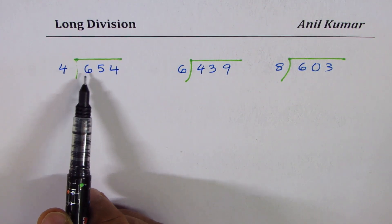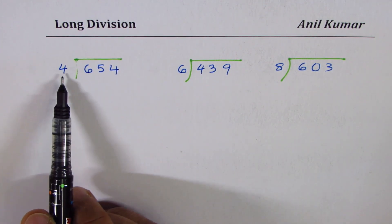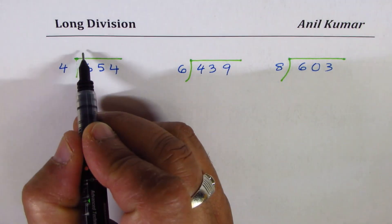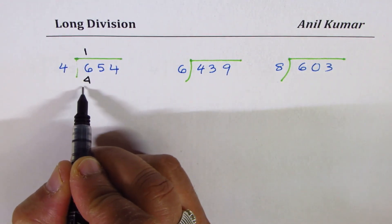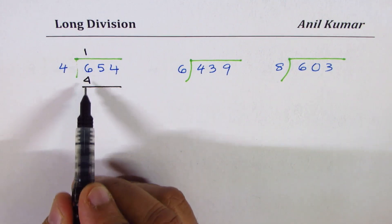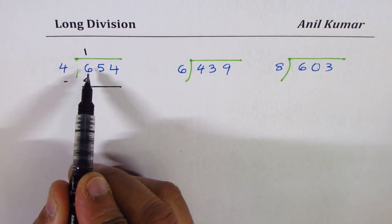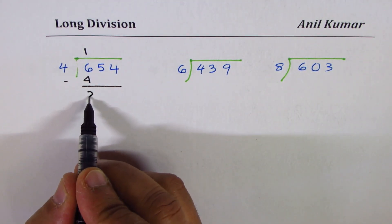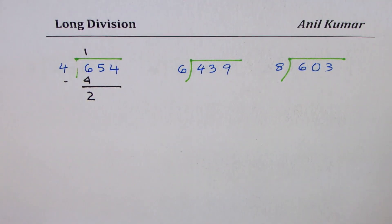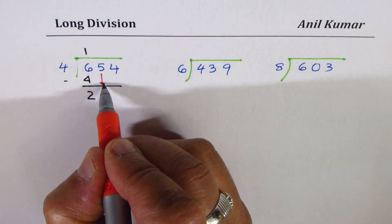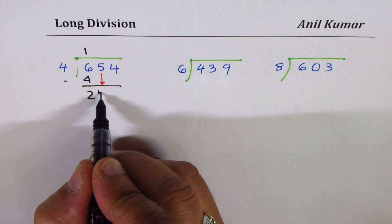Now, 6 is greater than 4, so 6 can be divided by 4. It goes one time. One time 4 is 4. The second step is we have to take away. So you take away 4 from 6, you get 2. Then bring down the next number, which is 5. It becomes 25.